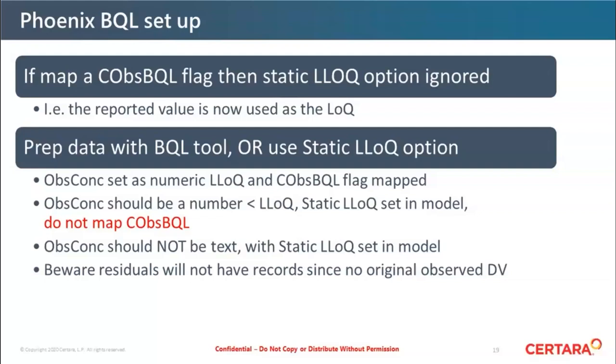And last but not least, when you come to looking at data, don't be surprised that the residuals table won't have any records. It's not able to generate that because there was no originally observed concentration for that point. When it says DV here, that's dependent variable. Sorry. That's a bit of an old terminology. It just means the concentration or maybe you're doing an effect model.